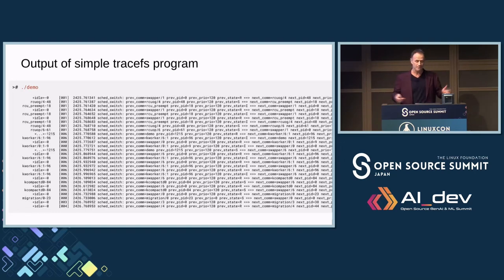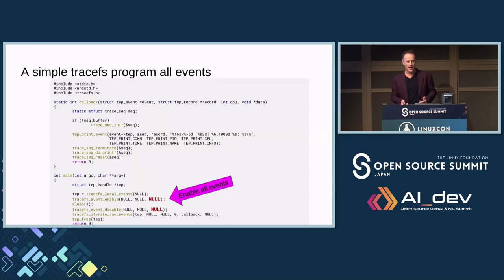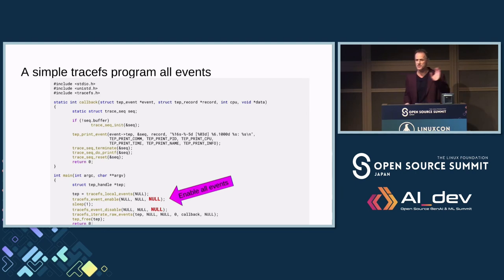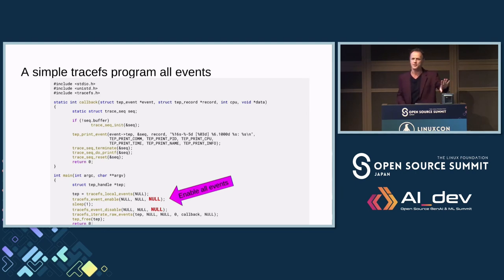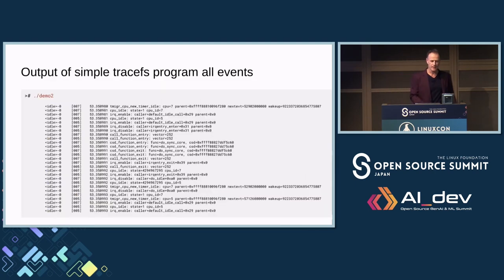That one little program is just that. Now, to enable all events, on the event side I just pass null instead of 'sched_switch'. Null, null — null basically means a wildcard. When I run tracing I get all the events. This is actual cut-and-paste from the application that you can download and try yourself.